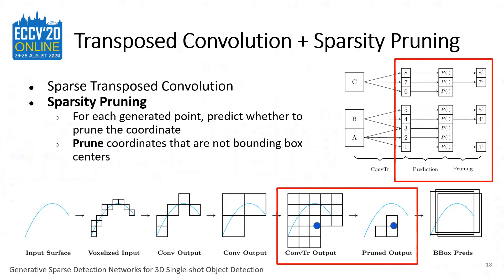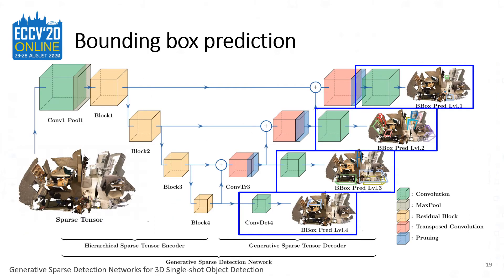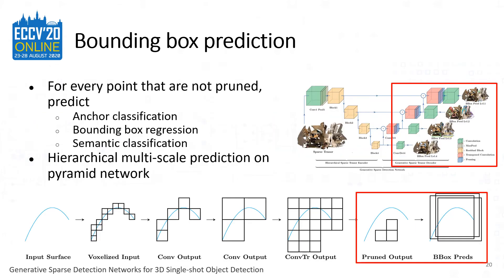As shown in the lower figure, the number of sparse voxels that increase after transpose convolution drops after pruning, and the efficiency gain is even more drastic in 3D. Finally, for every point after pruning, we make bounding box predictions. Since the points that are not pruned are most likely the center of the instance, we make such points predict the parameters of the bounding boxes. We parameterize bounding boxes in anchor classification, bounding box regression, and semantic classification.